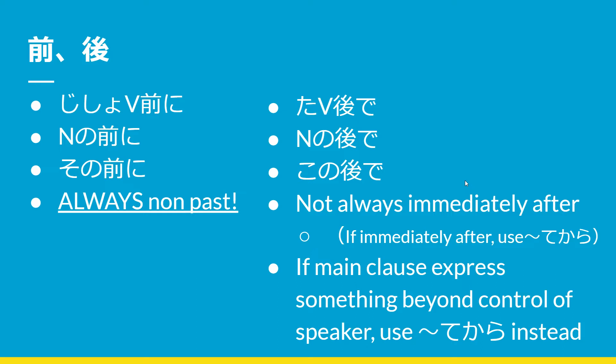後で is going to mean 'after.' Since it's something that happens after something else — meaning something has already happened and then after that you do something — you are going to use the past tense. The past tense marker is た. So, た form verb 後で. For example, 'after I eat, I will brush my teeth' — 食べた後で歯を磨きます。